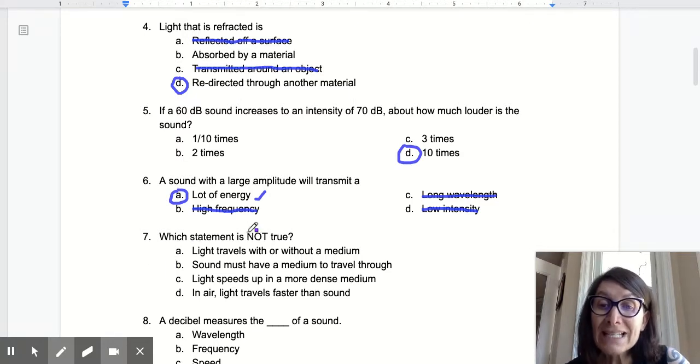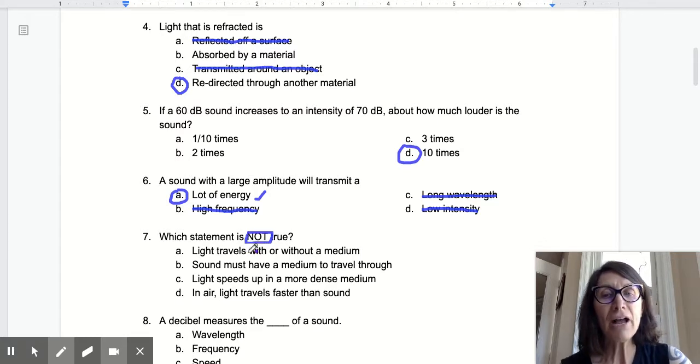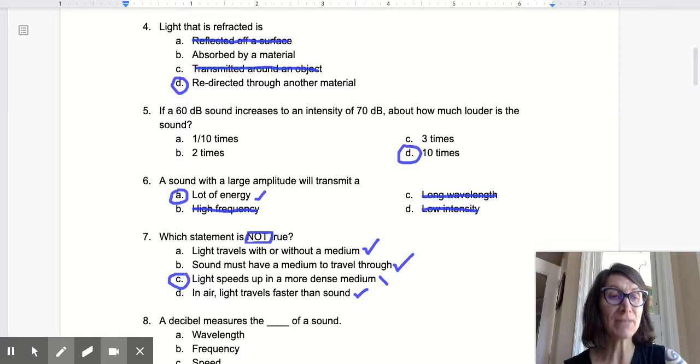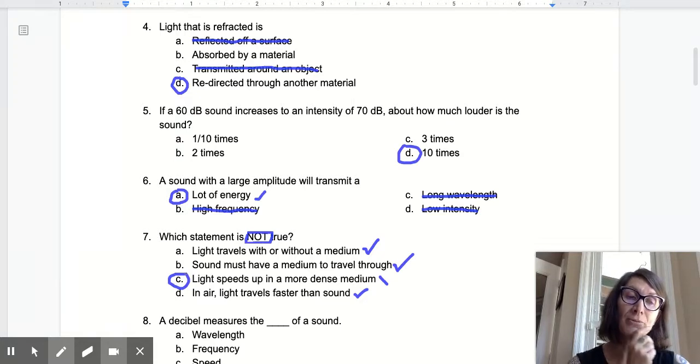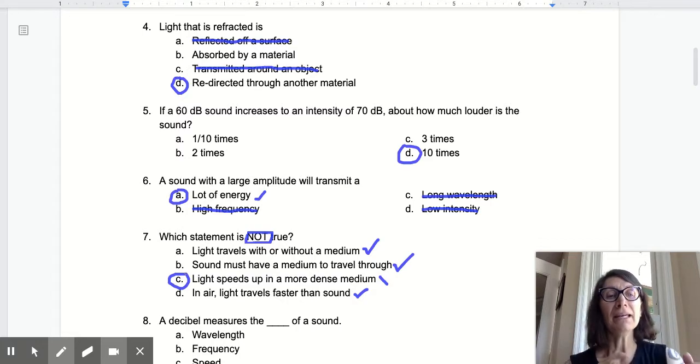Which statement is not true? Make sure you pay attention to those kind of things. Light travels with or without a medium. That is actually true. Sound must have a medium to travel through. That's actually true. Light speeds up in a more dense medium. No, I don't think that's true. In air, light travels faster than sound. That's actually true. So the one that's not true is light speeding up when the medium is denser. We know light is electromagnetic wave. Electromagnetic waves actually speed up in a less dense medium.